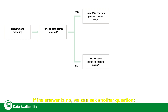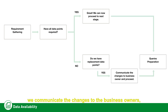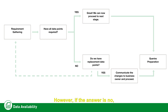If the answer is no, we ask another question: do we have replaceable data points readily available? If yes, we communicate the changes to the business owners, get confirmation, and proceed to the next stage. However, if the answer is no, we need to go back to the requirements gathering stage.